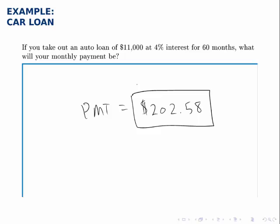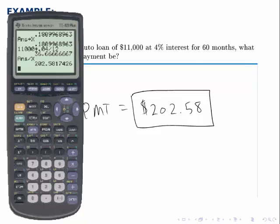Notice that we can do one more calculation. If you pay $202 every month for 60 months, you'll end up paying a total of $12,154.90. So for a loan of $11,000, you end up paying just over $12,000. And that extra $1,154 is the interest charge of this loan.